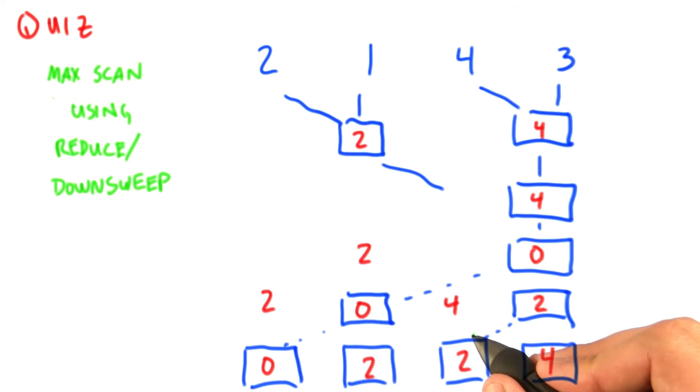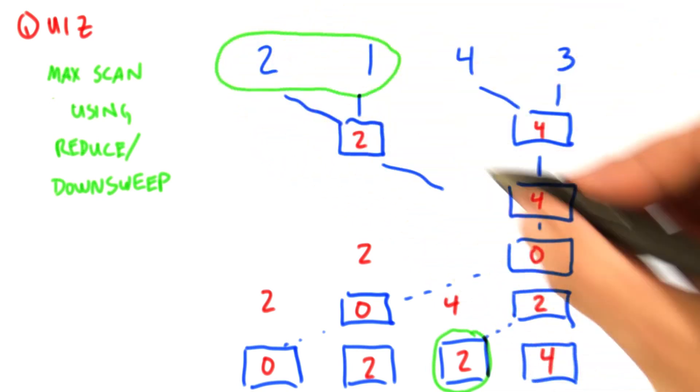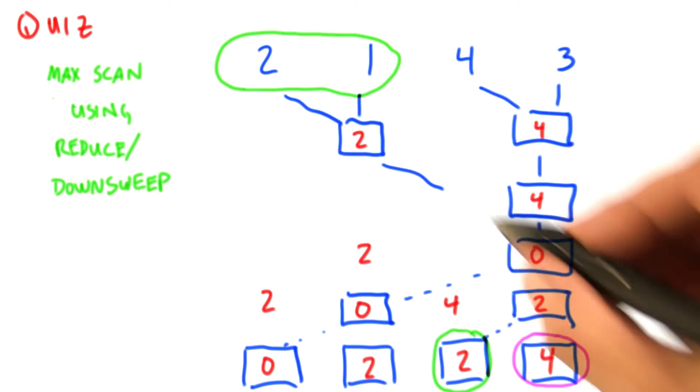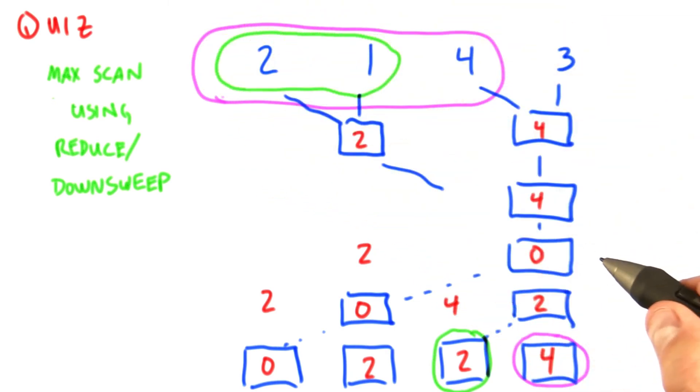Note that the output on any particular element is equal to the maximum value we've seen up to, but not including this element. The max value we see here is 4, which is the max value of each element we've seen up to this point. So that's the end of this point.